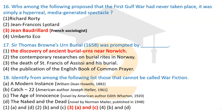Question sixteen: who among the following proposed that the first Gulf War had never taken place — that it was simply a hyperreal, media-generated spectacle? The correct answer is Jean Baudrillard, the French sociologist, who proposed this view about the first Gulf War.